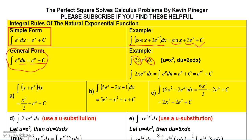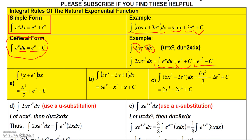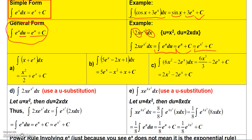This integral is in the form of e^u du, because e^u is e^(x²) and du is 2x dx. Integrating gives e^u plus a constant, then replacing u with x² gives the final answer: e^(x²) plus C.